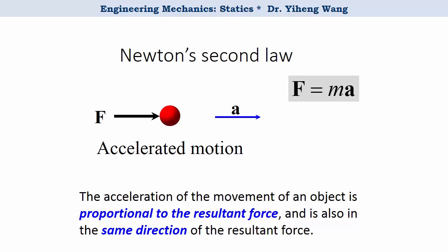Where M represents the mass of the object, A is acceleration, and F is the force. We can also rewrite this equation into the form A equals to F over M. In this form, we can not only see that acceleration is caused by the force, but more importantly, we can see that the mass of the object acts as a resistance to motion.